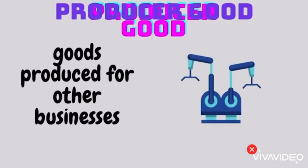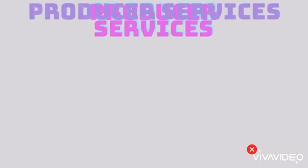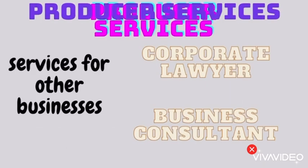Producer goods are goods produced for other businesses, like machines. Machines are goods which are produced to produce other products — a machine may produce many other products, even though the machine itself is a product. So this product is known as a producer good. Then producer services are services for other businesses, like a corporate lawyer or a business consultant. These are services which are provided to other businesses.